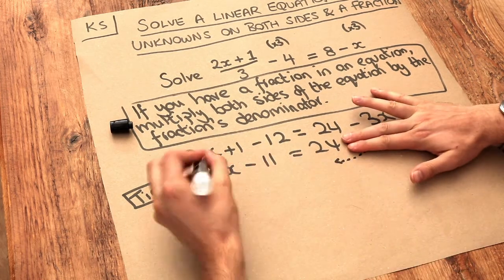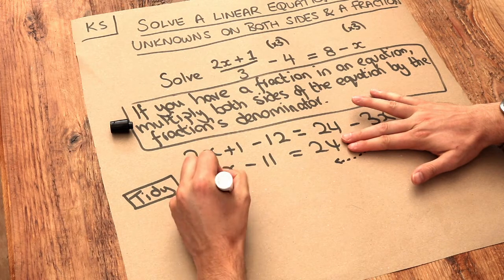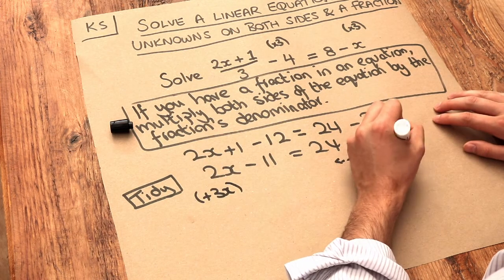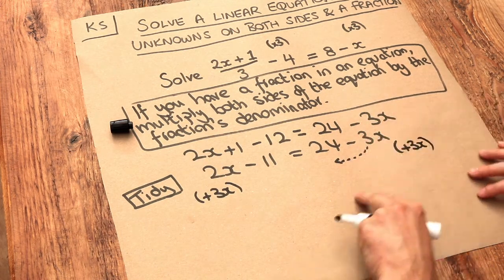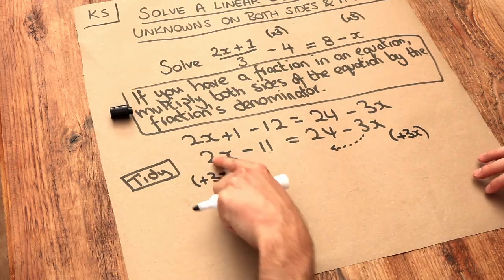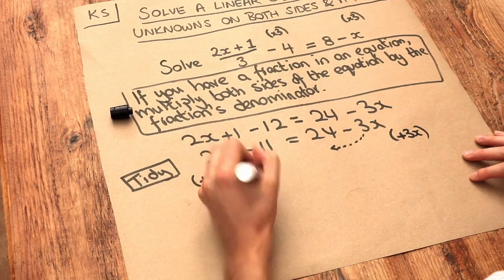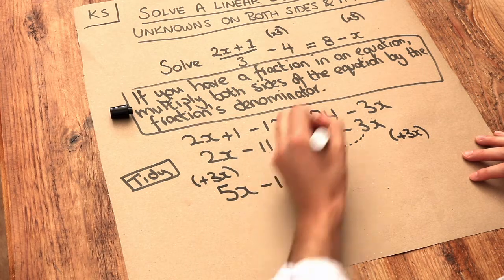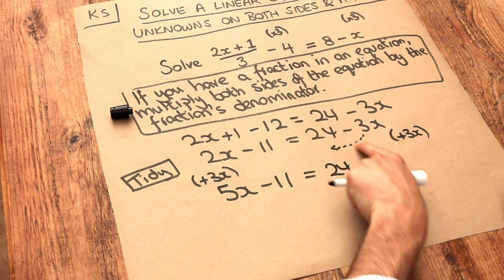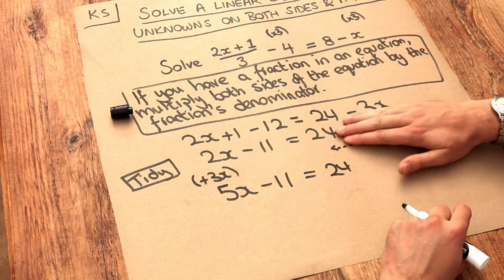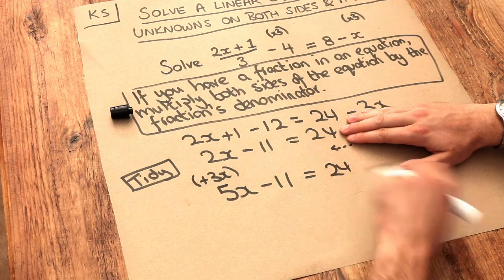And the way we get rid of that subtract 3x is to do the opposite, we add 3x. And remember, whatever we do to the left hand side, we have to do to the right hand side to balance it out. So 2x plus the 3x is 5x, still got that minus 11, still got that 24. But we've added 3x to the right hand side which cancels out the minus 3x, we're just left with the 24.